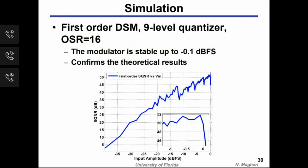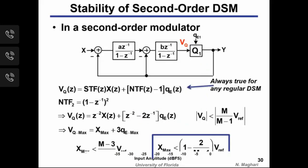Simulation with a 9-level quantizer at OSR 16 confirms this: sweeping input signal magnitude, the modulator remains stable up to nearly 0 dB full scale, technically saturating at −0.1 dB full scale, consistent with the theoretical result. However, higher-order modulators do not share this inherent stability.